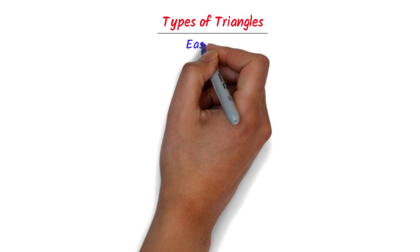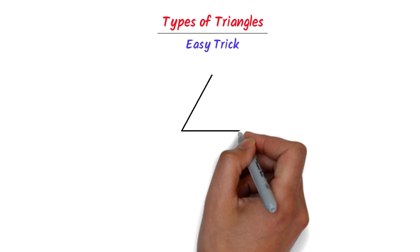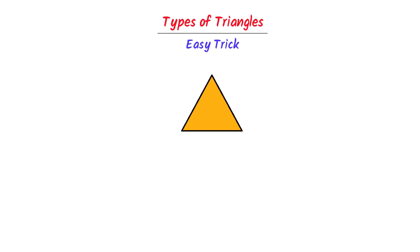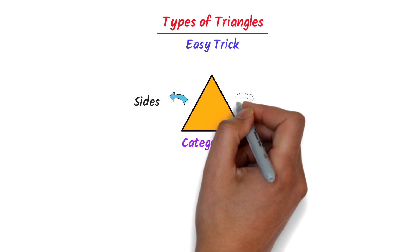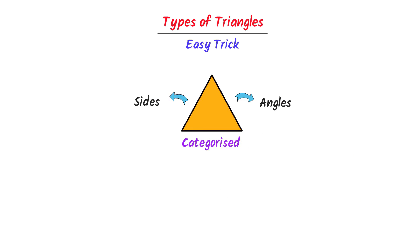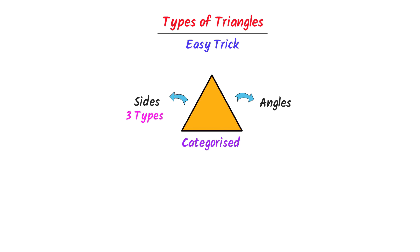Types of Triangles and Easy Trick to Remember Them. All triangles are categorized on the basis of sides and angles. According to sides, there are three types of triangles. Similarly, according to angles, there are also three types of triangles.